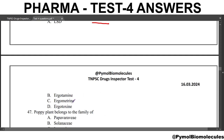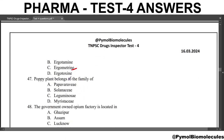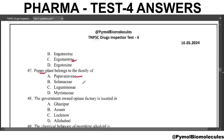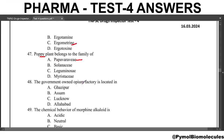Ergometrine is used. The poppy plant belongs to the family Papaveraceae. Next question: the government-owned opium factory is located in? The answer is Ghazipur. The Cinchona alkaloid factory is located in Darjeeling, and the opium factory is also located in Neemuch in Madhya Pradesh.